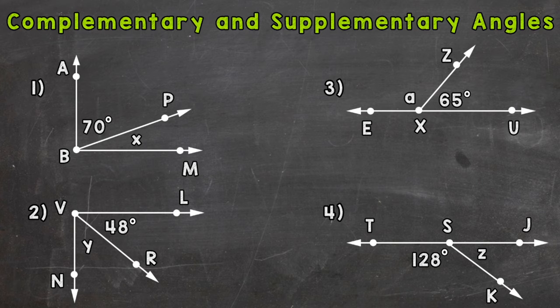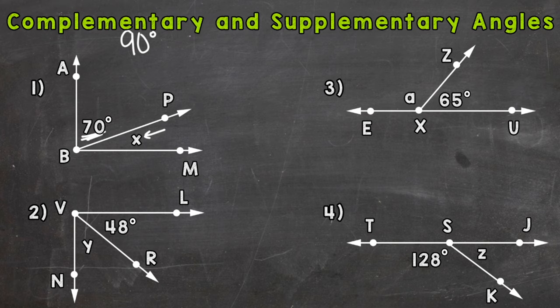For number one we have complementary angles. Complementary angles are angles that add up to equal exactly 90 degrees. For number one we're given a 70 degree angle and we need to figure out what X equals to get to 90 degrees. So 70 plus what equals 90 degrees? Some of these are harder than others, so some you may be able to figure out using mental math.